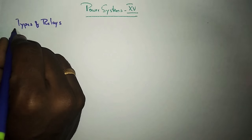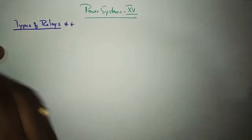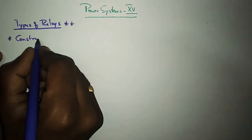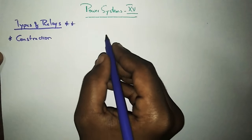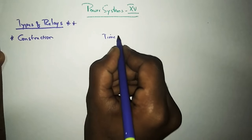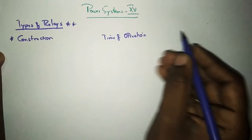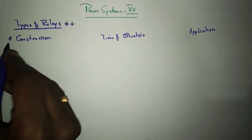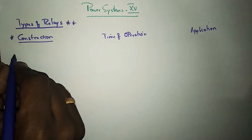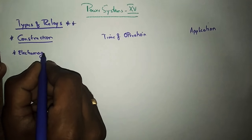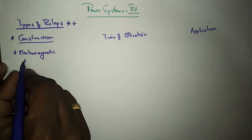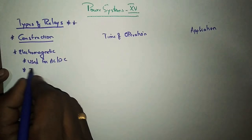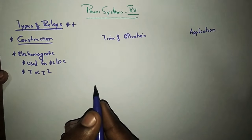Types of relays. This is also a very important topic and here I am going to provide you some classification of relays depending upon their construction, time of operation, and application. Depending upon construction, relays are classified as Electromagnetic Relays. These are used for both AC and DC, and the torque produced is directly proportional to the square of the current.